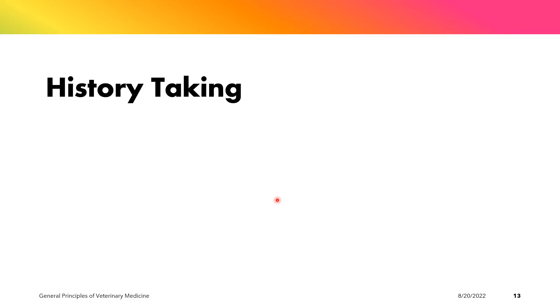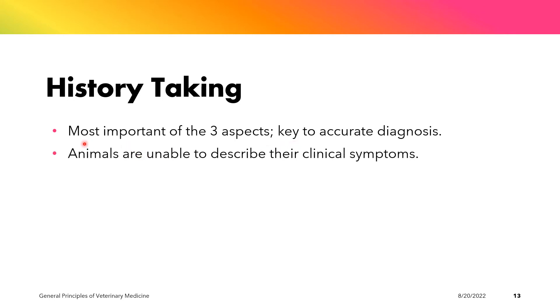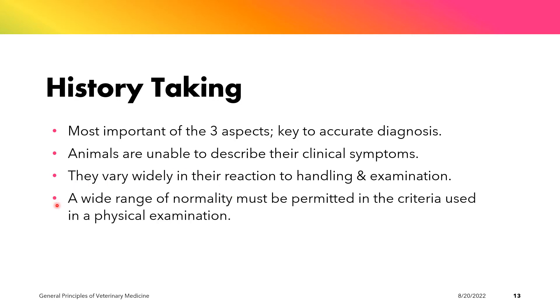History-taking is considered to be the most important of the three aspects of clinical examination. It is also important to note that in history-taking, animals are unable to describe their clinical symptoms. They vary widely in their reaction to handling and examination. Hence, a wide range of normality must be permitted in the criteria used in a physical examination of animals.